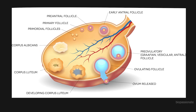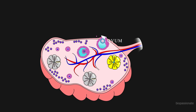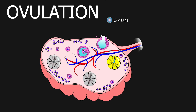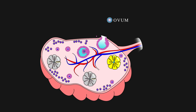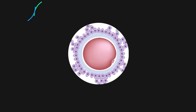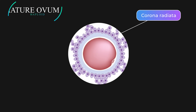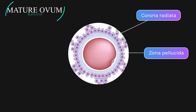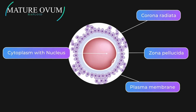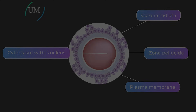Finally, the Graafian follicle ruptures to release the secondary oocyte from the ovary by a process called ovulation. A mature ovum consists of a haploid nucleus with cytoplasm surrounded by a plasma membrane, zona pellucida, and corona radiata.